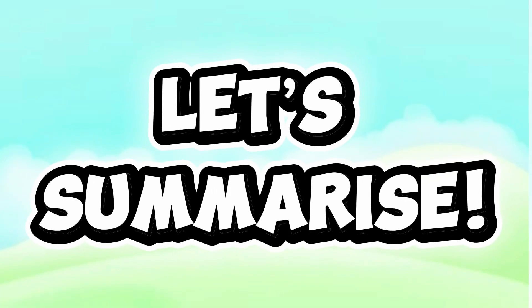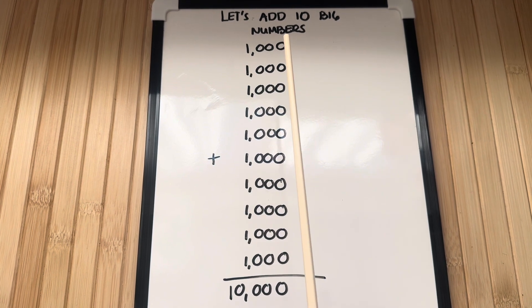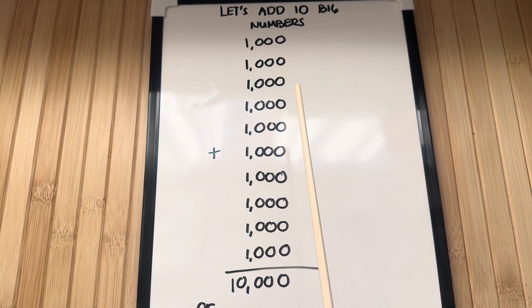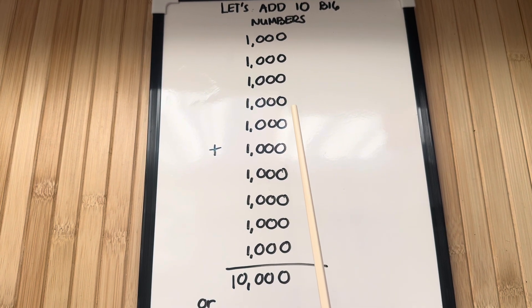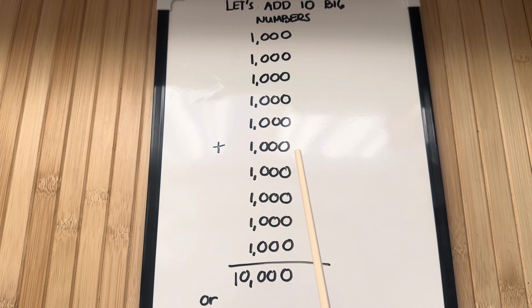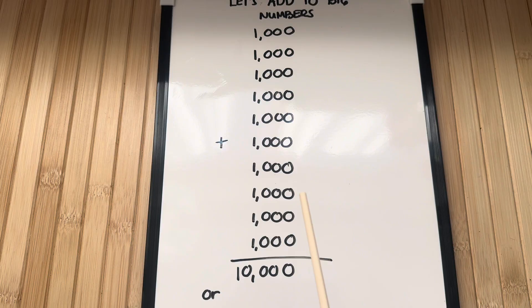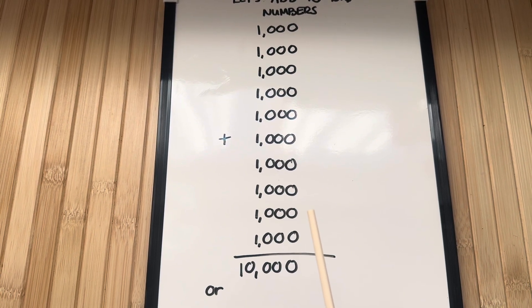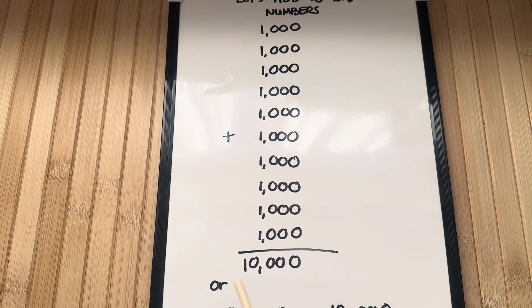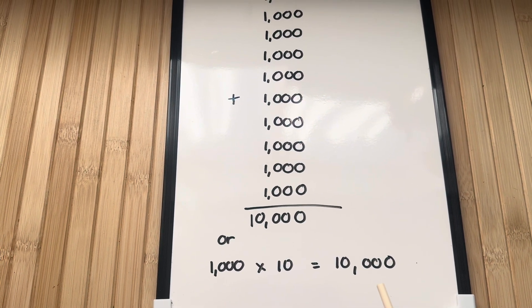Let's summarize. Join me and let's add ten big numbers. One thousand plus one thousand plus one thousand plus one thousand plus one thousand plus one thousand plus one thousand plus one thousand plus one thousand plus one thousand equals ten thousand. Or, 1,000 times 10 equals 10,000.